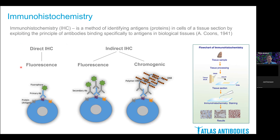Immunohistochemistry — what is that? It is the method used for detection of proteins in tissues and cells, and is based on the principle of antibody binding to its particular antigen in tissues and cells. It can be performed either directly, using fluorescently labelled primary antibodies, or indirectly, either using fluorescently labelled secondary antibodies to detect the primary, or a chromogenic reaction with the secondary antibody.